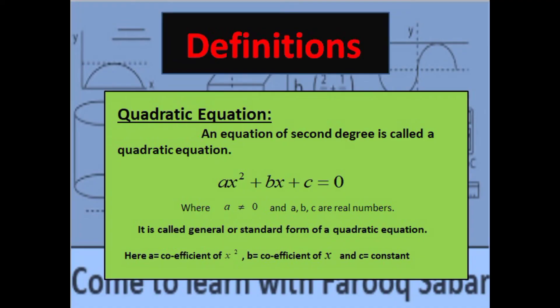First definition: Quadratic Equation. An equation of second degree is called a quadratic equation: ax² + bx + c = 0. A quadratic equation is an equation in which the power of the variable is at most 2.